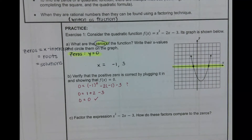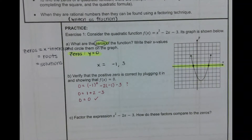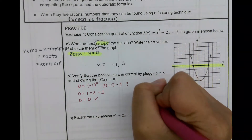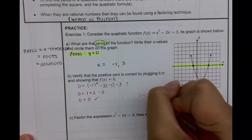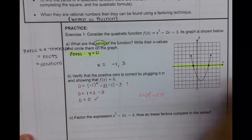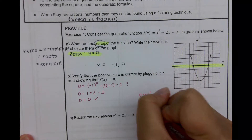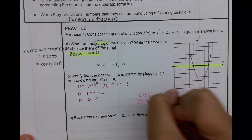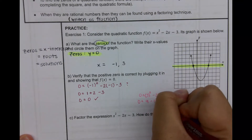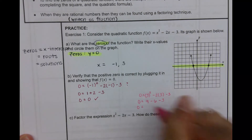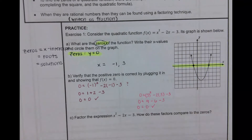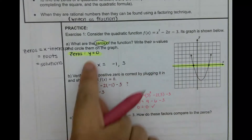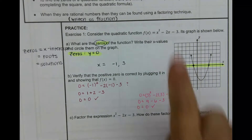Now let's check x equals three. I'm going to plug three in for x: three squared minus two times three minus three. Three squared is nine. Negative two times three is negative six, minus three. Nine minus six is three, three minus three is zero. Does zero equal zero? Yes, it does. This verifies that both of these are solutions, or zeros, to my function.